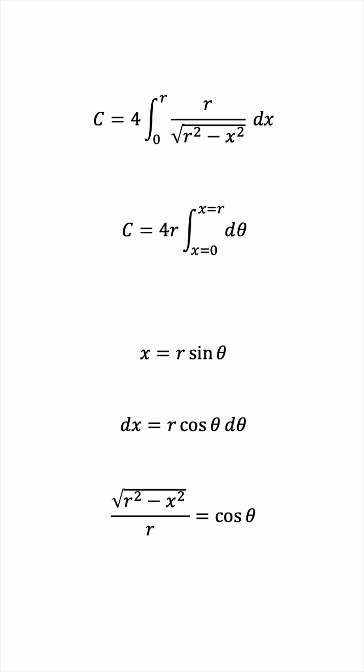We'll either transform the bounds to become in terms of theta, or we'll integrate, plug in theta in terms of x by resubstituting, and then plug in the x bounds. Make sense?